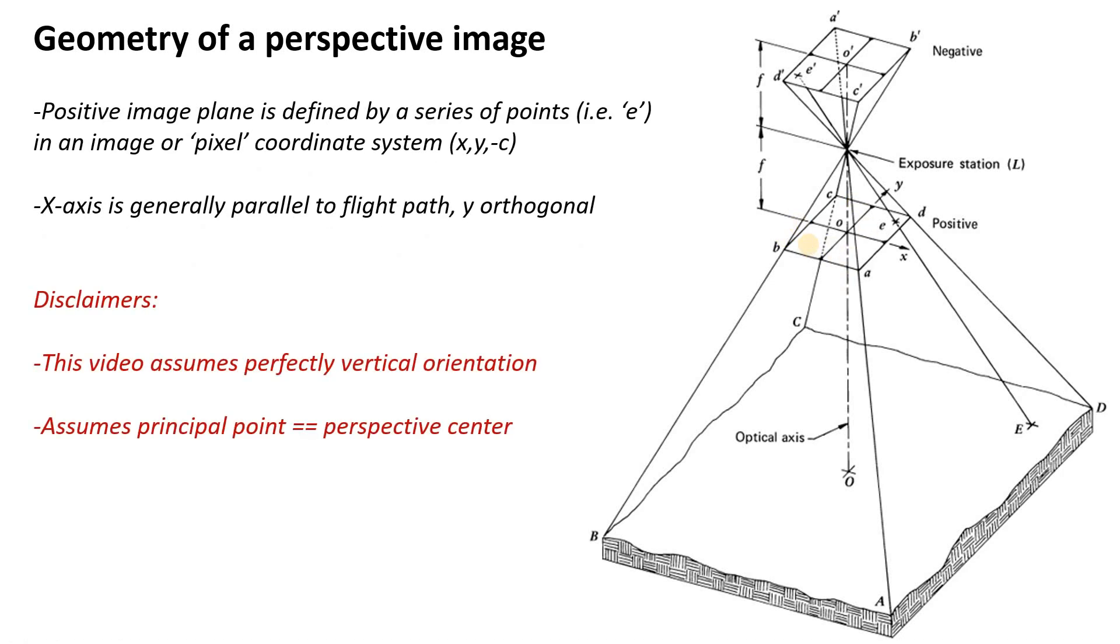And indeed we can imagine an image as made up as a series of points much like point E that each one can be defined by coordinates within what's called the image or pixel coordinate system. So that would be an X coordinate here and a Y coordinate here. The X axis is always oriented parallel to the flight path and Y is always orthogonal to that. We often call this a 3D Cartesian coordinate system because we add an extra coordinate minus C which is basically the focal distance.